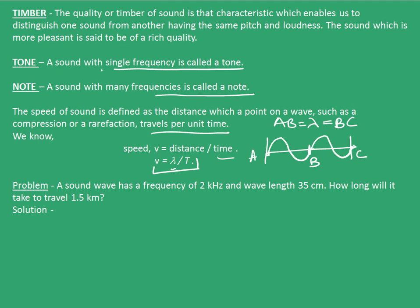Now we will look into a problem and see how to calculate the speed of sound and the distance it travels. A sound wave has a frequency of 2 kilohertz and a wavelength of 35 centimeters. We have been asked to calculate the time it will take to travel 1.5 kilometers. First, in order to calculate the time taken, we need to find the speed of the sound, which requires the wavelength and time period. The wavelength is given as 35 centimeters, and from the frequency we will calculate the time period.